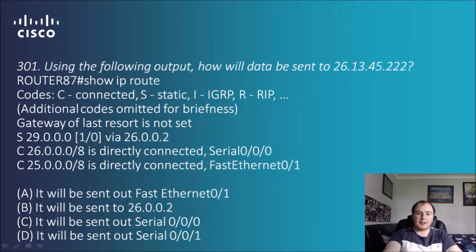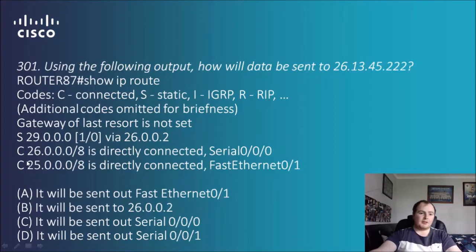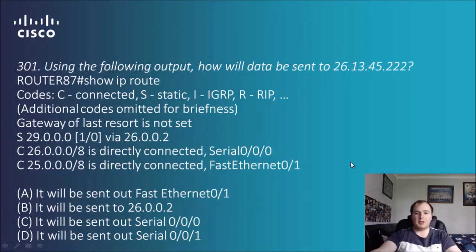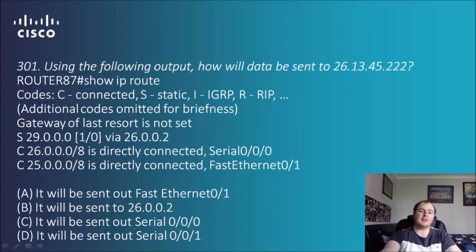Question 301: using the following output, how will data be sent to 26.13.45.222? We've got some show IP route output with connected, static, IGRP, and RIP entries. Last resort is not set. There's a static route along with two directly connected routes, showing what interfaces they go out of — fast ethernet and serial. Since it's on the 26 network, looking at the directly connected network, the answer is C: it'll be sent out serial zero/zero/zero/zero.